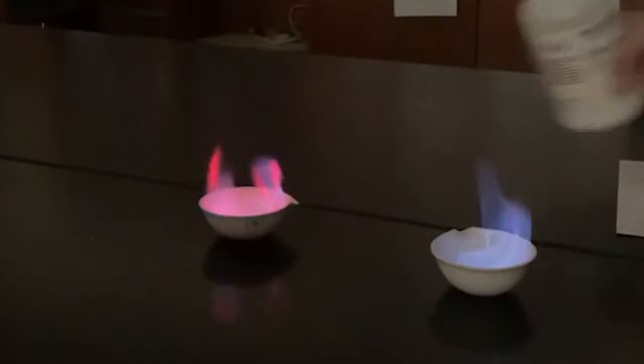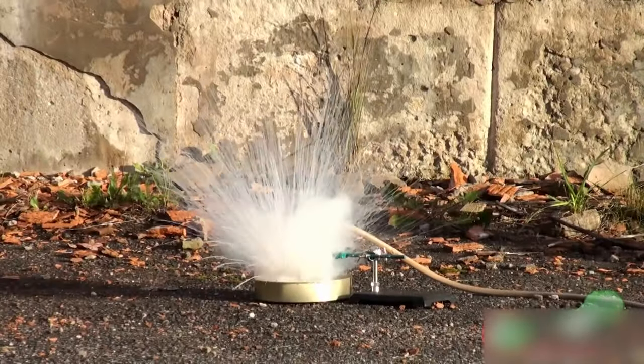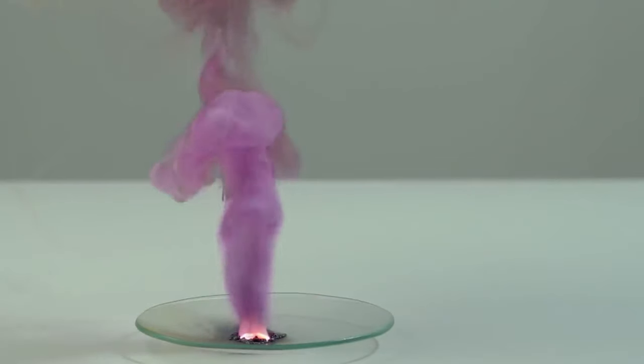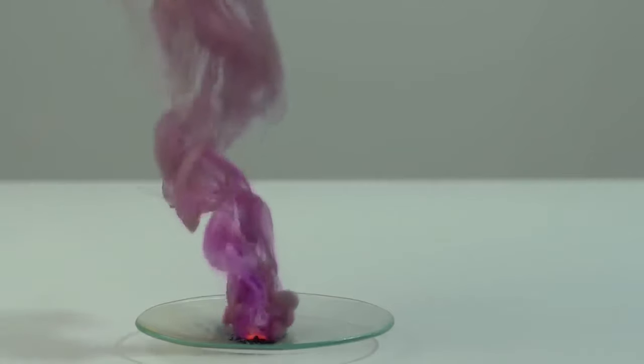Rubidium salts introduce a vibrant lavender-pink hue, unlike the common red of strontium or blue of copper. This distinctive color results from electrons shifting between rubidium's energy levels. Those purple sparkles vividly betray rubidium's presence, offering split-second brilliance before it combusts in another vivid display of unbridled chemistry.